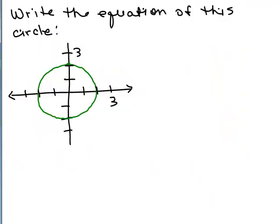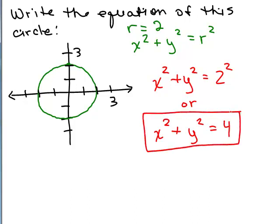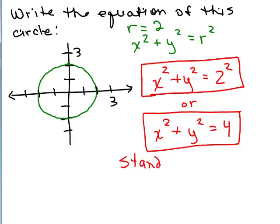Here's our next problem: write the equation of this circle. We know what an equation of a circle looks like when centered at the origin, and the center of the circle is at the origin, so all we need to do is figure out what the radius is. We look at the picture and see it's two spaces in either direction, so the radius is 2. The formula gives us x squared plus y squared equals 2 squared, or x squared plus y squared equals 4. Both of these are correct — that's an equation of a circle in standard form, and it's easy to tell the radius is 2.